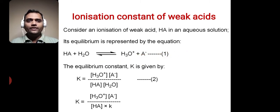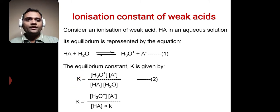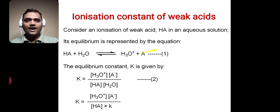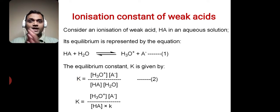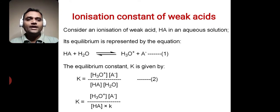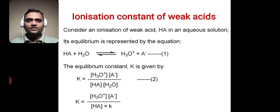By the equilibrium law, the equilibrium constant K for this reaction is given as the product of molar concentrations of products divided by the product of molar concentrations of reactants. This is equation 2, and we have discussed this in the chapter on chemical equilibria.